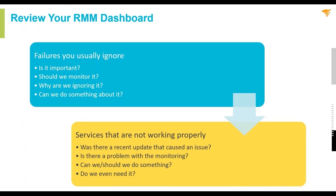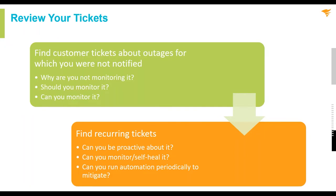As I visit partners, one of the things I do is dump out tickets and information about the environment and review them. Way too often I'll find things that are ignored or not working the way they should, and I'm told 'yeah, it's normal.' And I say no, it's really not — there's always something you can do to tweak it. Similarly, when looking at your tickets: find customer tickets about outages you were not notified for and decide why you're not monitoring. Is it because the customer isn't paying for it? Is it because you haven't bothered to do it? Can you monitor it? What is the next step?